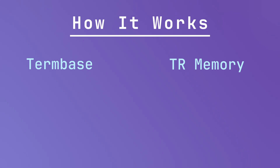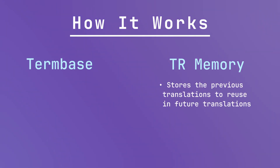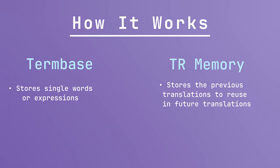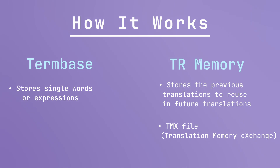CAT tools also have a similar feature called term base. While both translation memory and term base are databases used in translation, they have different purposes. Translation memory stores previous translations to reuse in future translations, while term bases store single words or expressions to maintain consistency in organizations or products. In CAT tools, translation memory uses TMX file format, and term base uses TBX file format to store data.